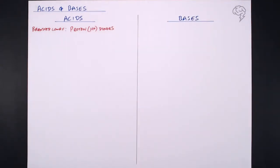Now there are different kinds of acids. Basically we have strong acids and we have weak acids - not to be confused with concentrated or dilute. They're very, very different.